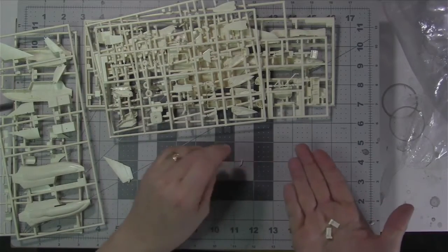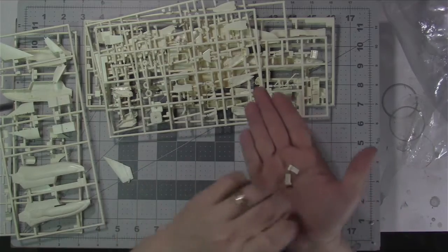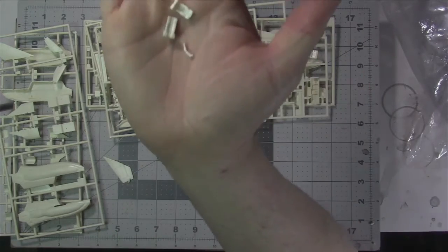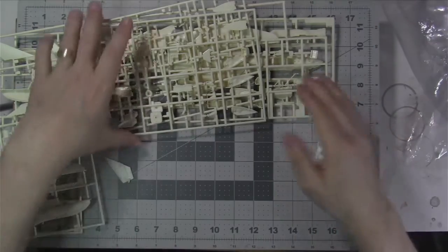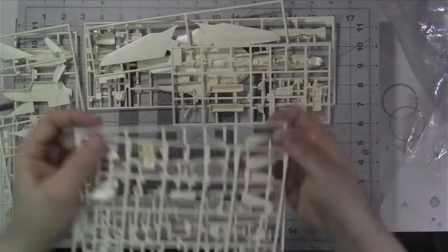What else have I got here? Looks like some, maybe some cockpit seats. A little tiny something else that's a little tiny. I'm going to have to put that in a separate little container.